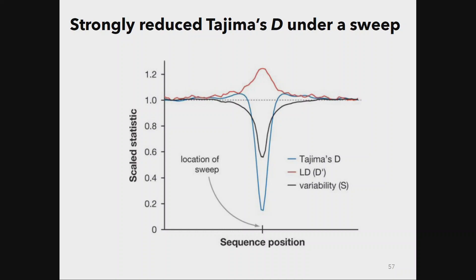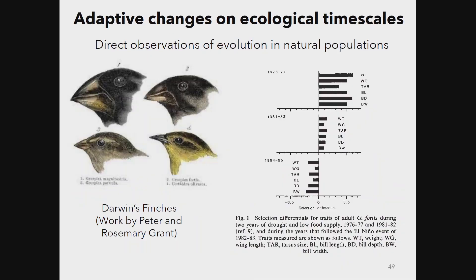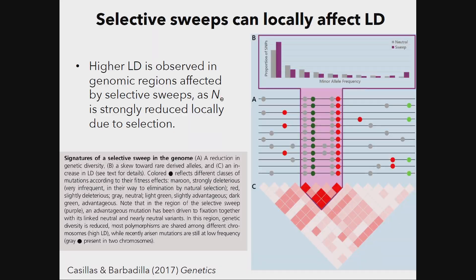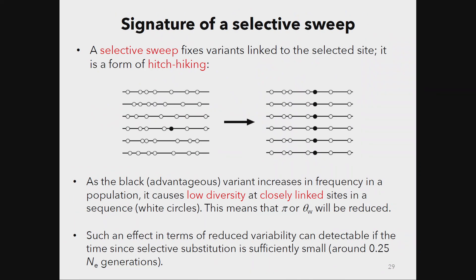Why is there increased linkage disequilibrium around a sweep? Looking at haplotypes, before the sweep there's some variability and less linkage between sites. But after the sweep, one haplotype dominates: a site near the beneficial mutation is almost always linked to that neighboring site. So we see an increase in the level of linkage disequilibrium or statistical association around the sweep region.